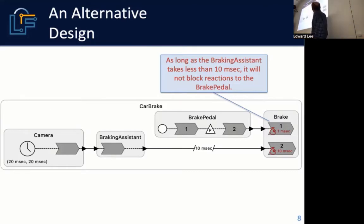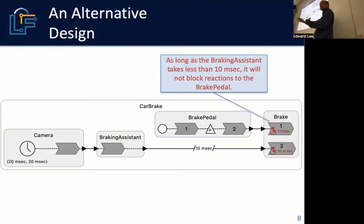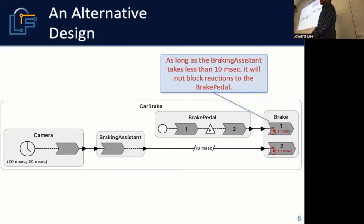Suppose the brake pedal event happens 10 milliseconds and one millisecond after the camera frame. If the braking assistant computation is completed within 10 milliseconds, the braking assistant event will be present and can be processed right away without any waiting. Then you process the brake pedal event — and as long as that processing is quick, which it should be since it's just an actuation, you're okay.